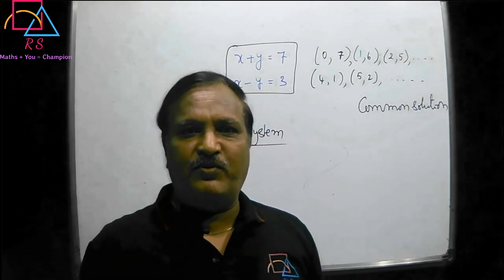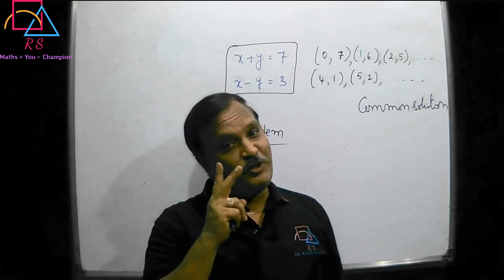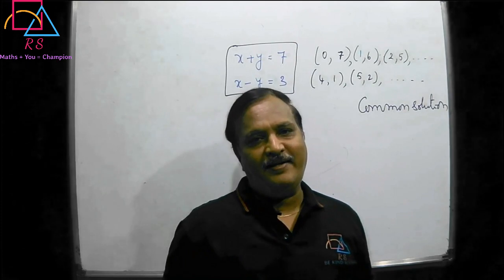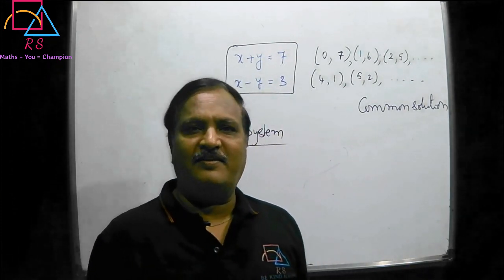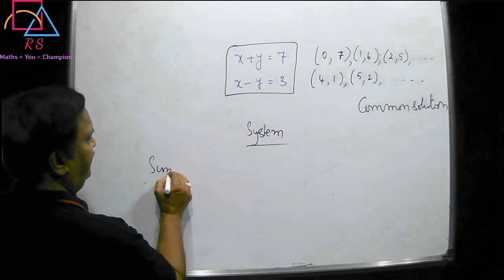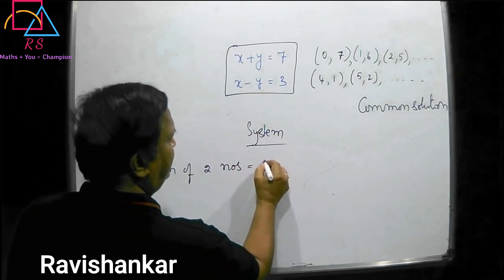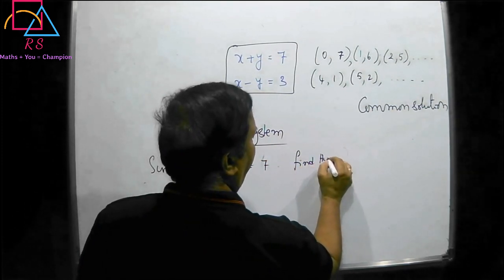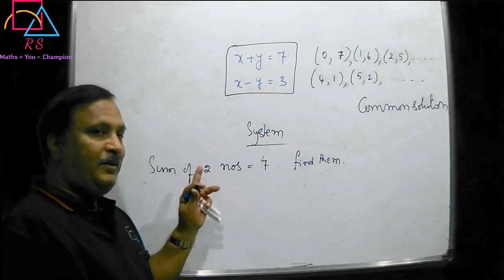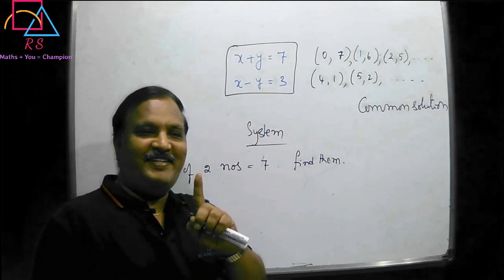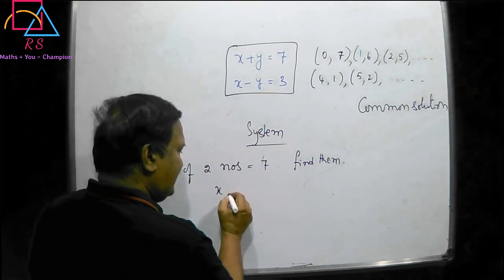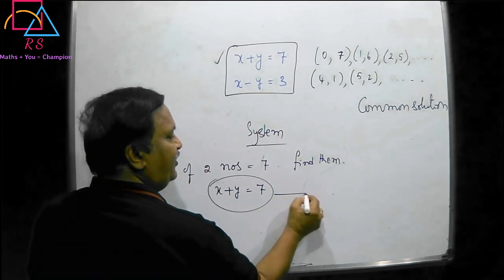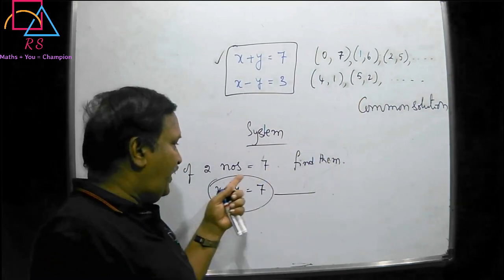Suppose when you are doing word problems, if there are only two variables, then there should be two conditions, because every condition will give an equation. So there should be two conditions — then only you will be getting a unique answer. For example: 'Sum of two numbers is equal to 7. Find them.' So two numbers means two variables. There is only one condition. Let the two numbers be x and y. Sum means x plus y is equal to 7. So how many solutions are there? Many solutions — you will not get a unique solution.